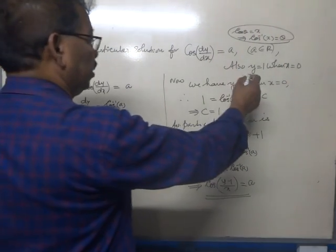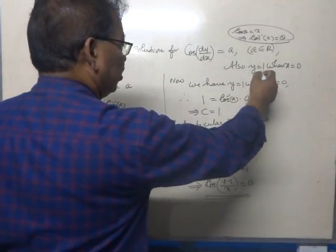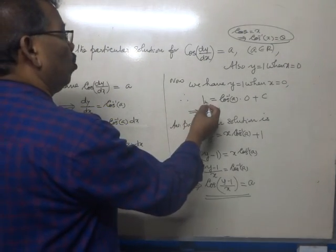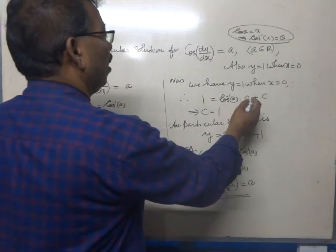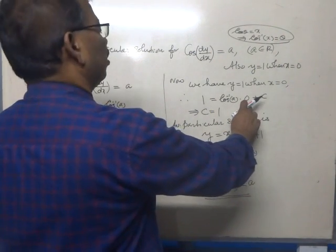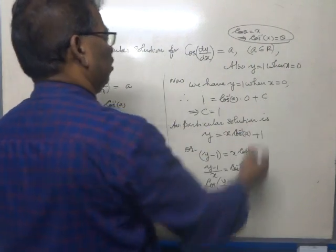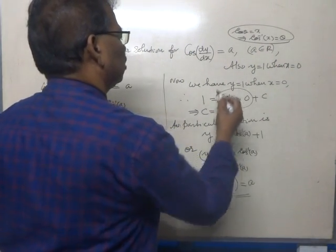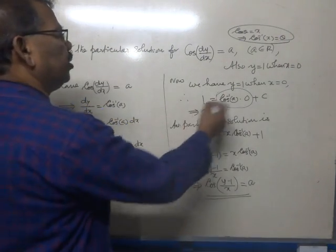It's given in the question that when x takes the value 0, y is equal to 1. So we can write, 1 is equal to cos inverse a into x is 0, plus c. This term becomes 0, so 1 is equal to c.